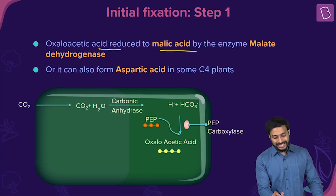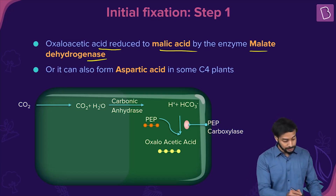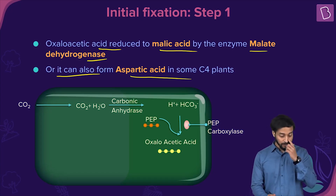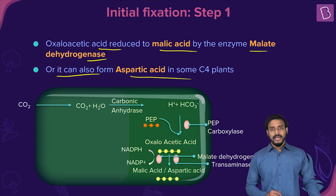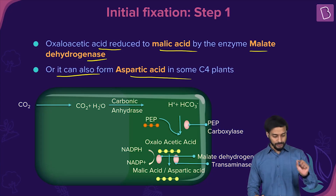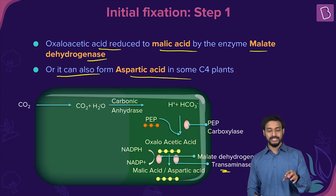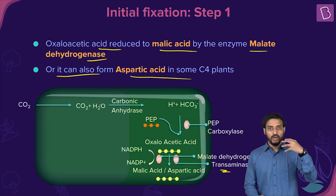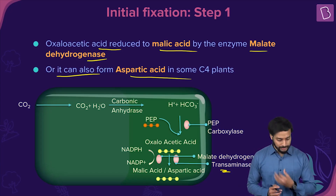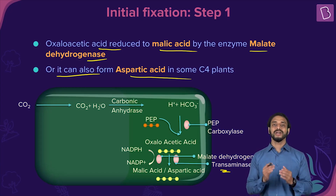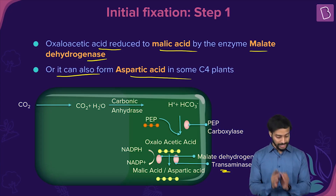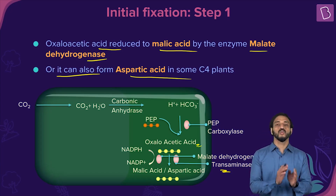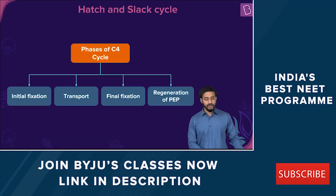Oxaloacetic acid is reduced to malic acid by the enzyme malate dehydrogenase. Alternatively, in some C4 plants, it can form aspartic acid via the enzyme transaminase through amination — the addition of an amine group. So the product is either malic acid or aspartic acid depending on which enzyme is present.